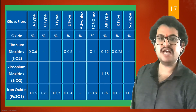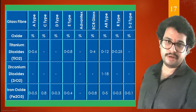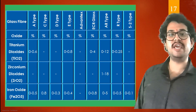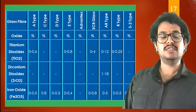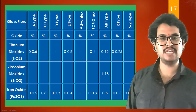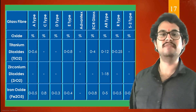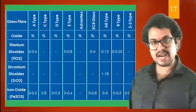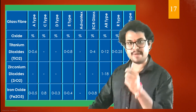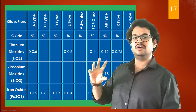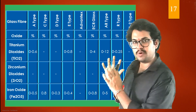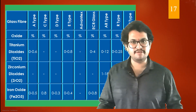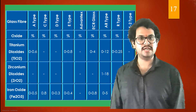In the next class we will see about each and every category of this sub-classification of glass fiber material and, if possible, how each type of glass fiber material is manufactured — using pictorial representations for a clear explanation. With this I will take a leave for today. Thank you, we will meet in the next class.